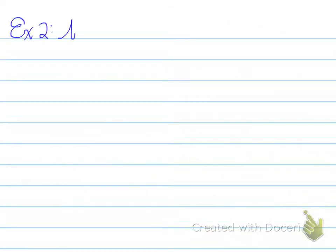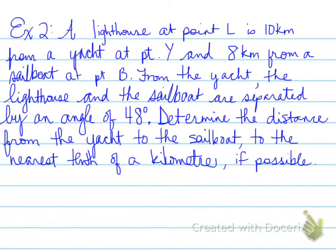Alright, next question. Example number two. A lighthouse at point L is 10 kilometers from a yacht at point Y and 8 kilometers from a sailboat at point B. From the yacht, the lighthouse and the sailboat are separated by an angle of 48 degrees. Determine the distance from the yacht to the sailboat to the nearest tenth of a kilometer.